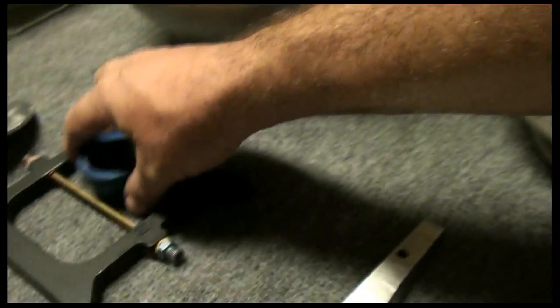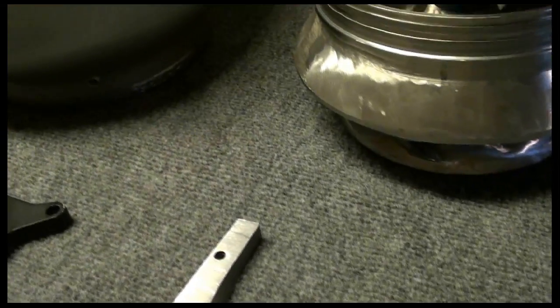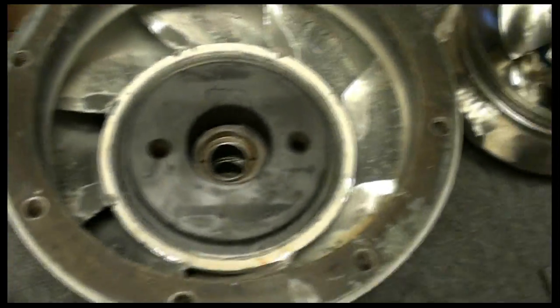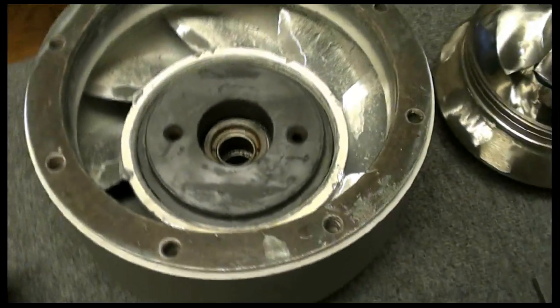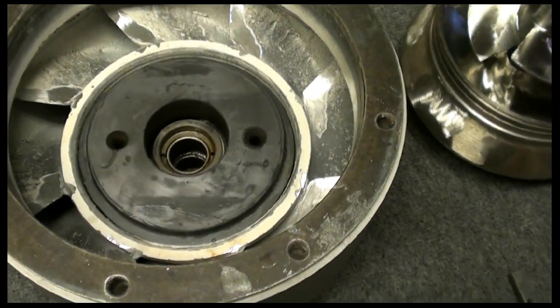So you got your impeller, the water leaves the impeller. Next thing it's gonna enter is the bowl. So we come to the bowl and I tell you right now, some people believe they work, some people they don't. But if you have a Berkeley bowl, the Dominators don't apply. The Dominator will have a ridge and the back of your impeller slides in it.